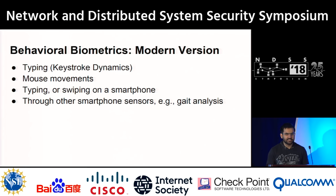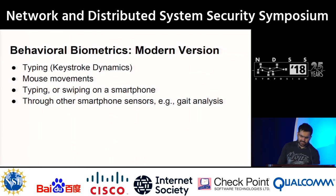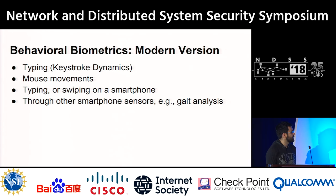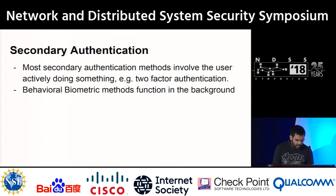The intuition behind our attacks should be generally applicable to other kinds of biometrics — in the paper we extended our results to Android swipe datasets as well — but in this talk I'll just focus on keystroke dynamics to keep things simpler. We study these in the context of secondary authentication.